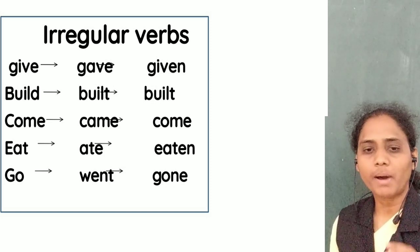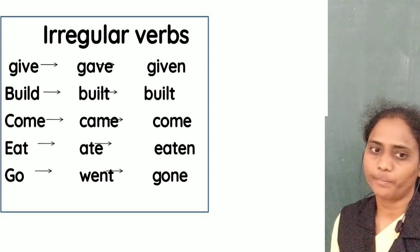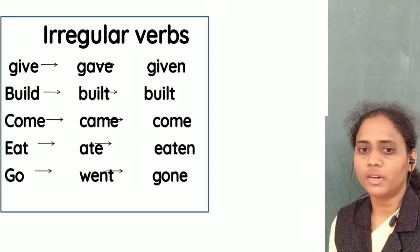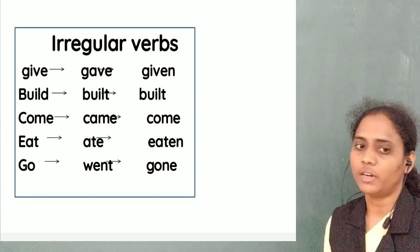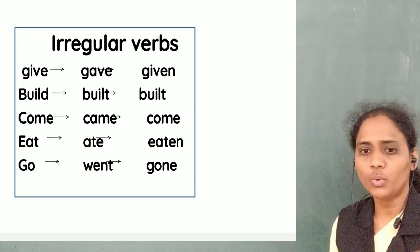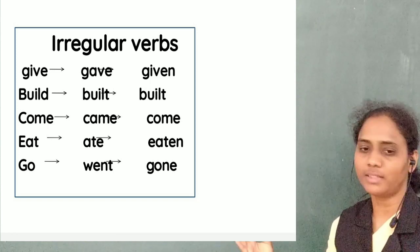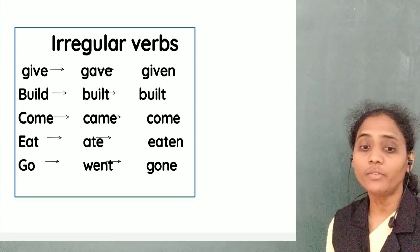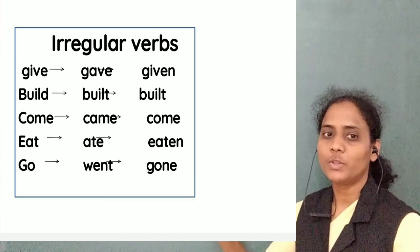'Given' is the past participle, or the V3 form. These types of verbs are called irregular verbs. There are no rules for making past forms with them, so you have to memorize the correct forms. There are many more irregular verbs in English.